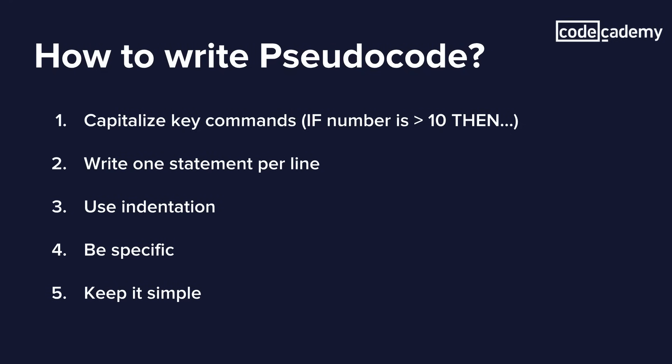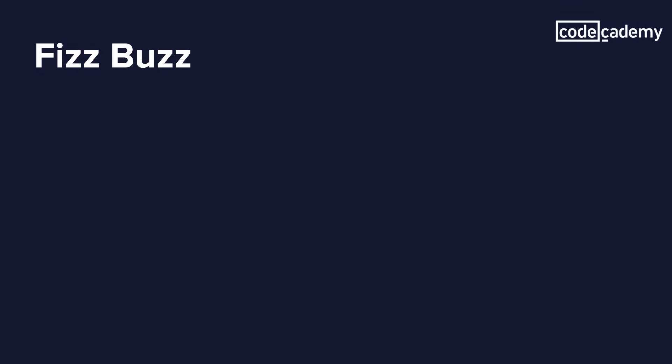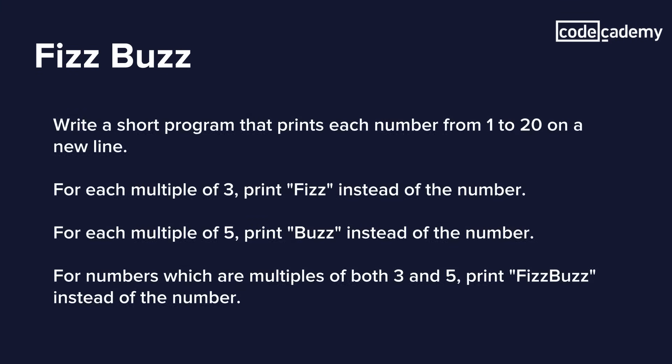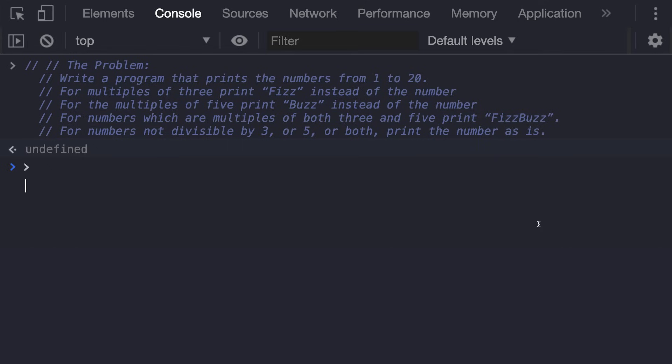This is a classic interview question and coding challenge that is very popular — it's called FizzBuzz. Here are the instructions: we're going to write a short program that prints each number from 1 to 20 on a new line. For each multiple of 3, print Fizz instead of the number. For each multiple of 5, print Buzz instead of the number. And for numbers which are multiples of both 3 and 5, print FizzBuzz instead of the number. I'm using Chrome DevTools console to solve the problem, and I've copied and pasted the instructions so it's easier to break down what we're going to be doing.